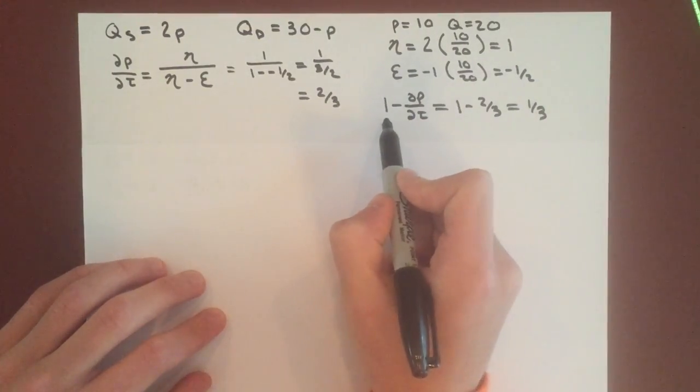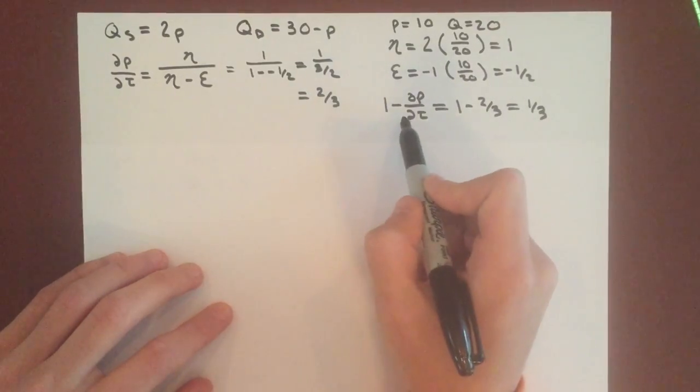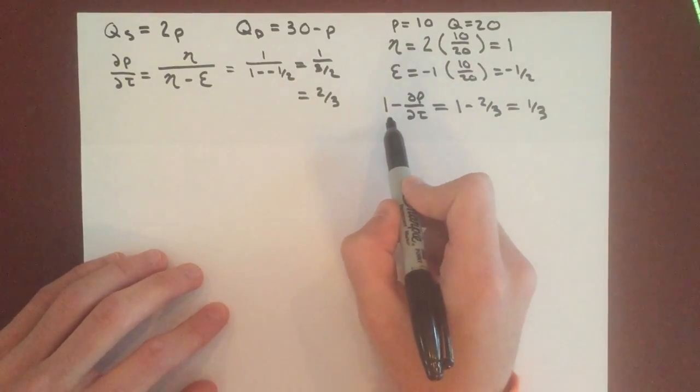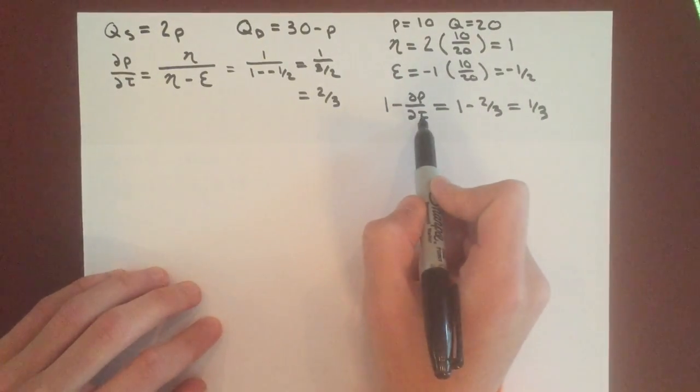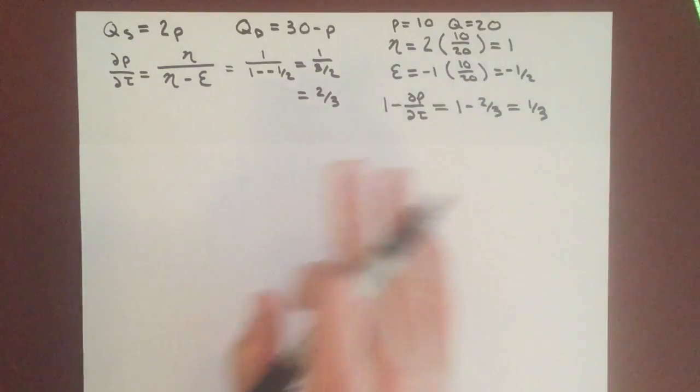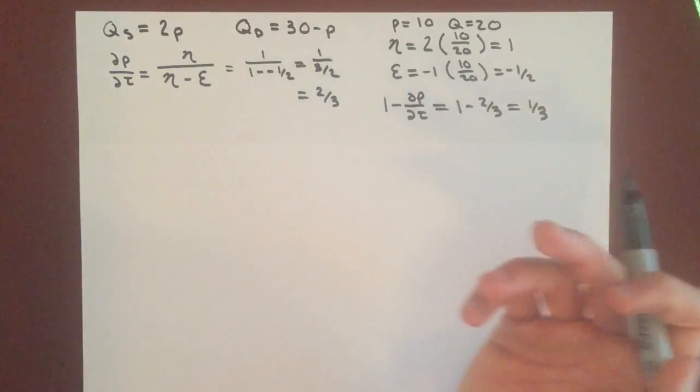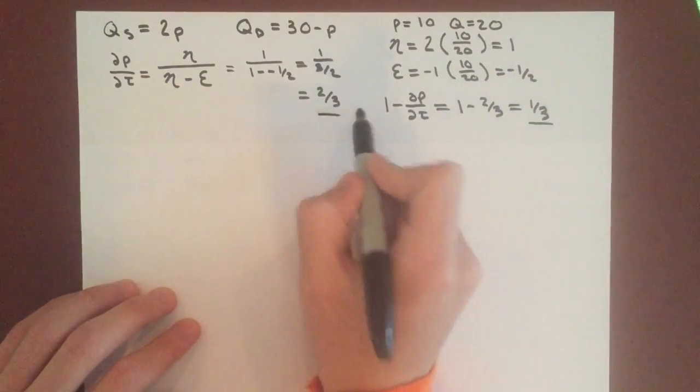Here we get consumers will pay 2/3 of any tax instituted, and producers will pay 1/3, because it's 1 minus incidence on consumers. These add to 1, which is good, because producers and consumers together must pay the entire amount of the tax.